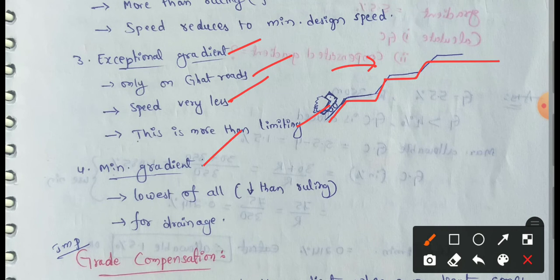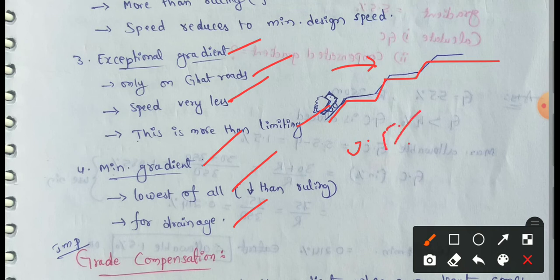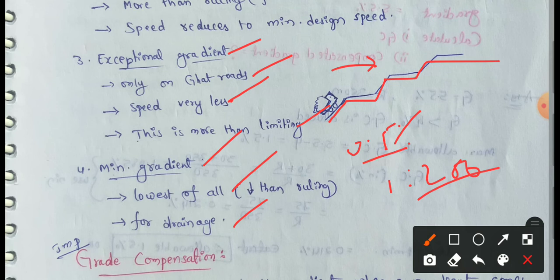Minimum gradient is the lowest of all — very low design speed. We use minimum gradient for drainage purposes. For example, 0.5% or 1 in 200. For concrete drains, the minimum gradient is 1 in 200, which is 0.5%.